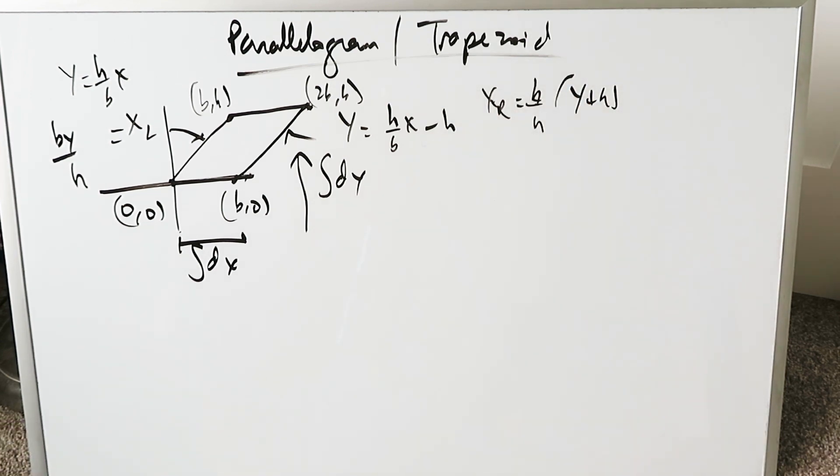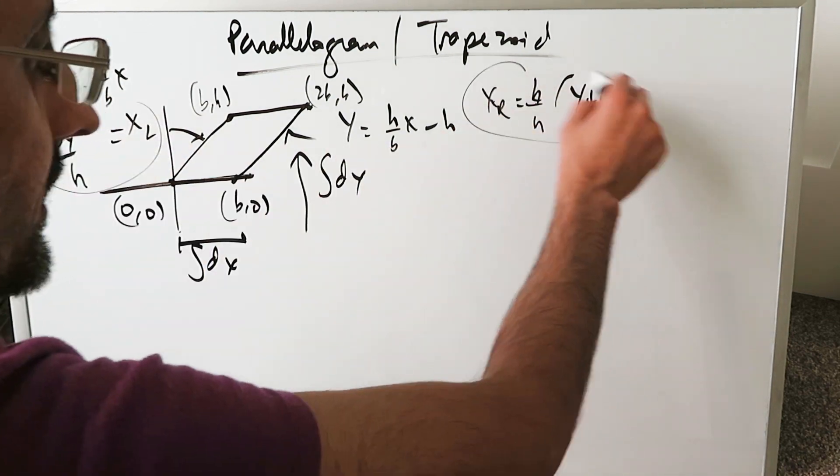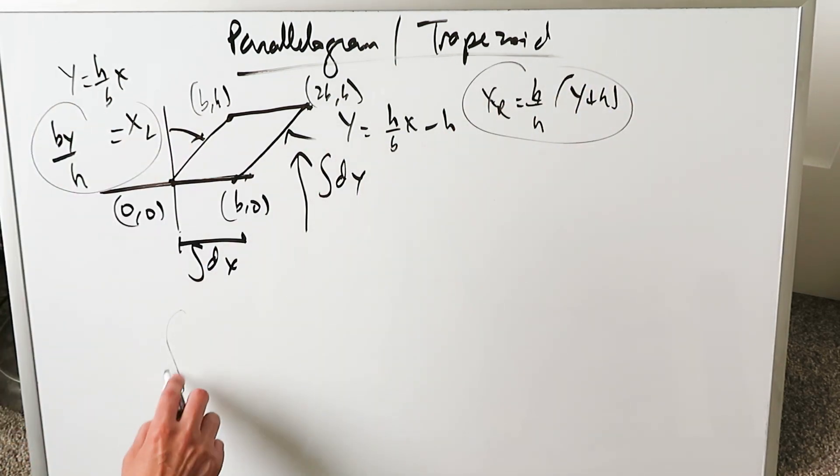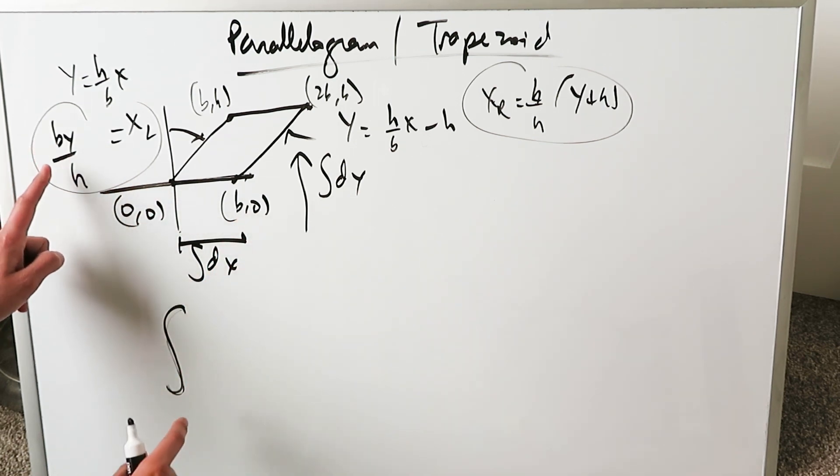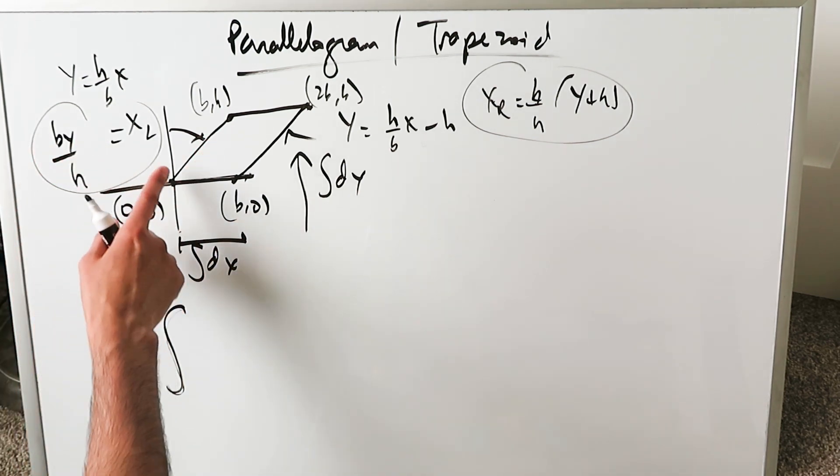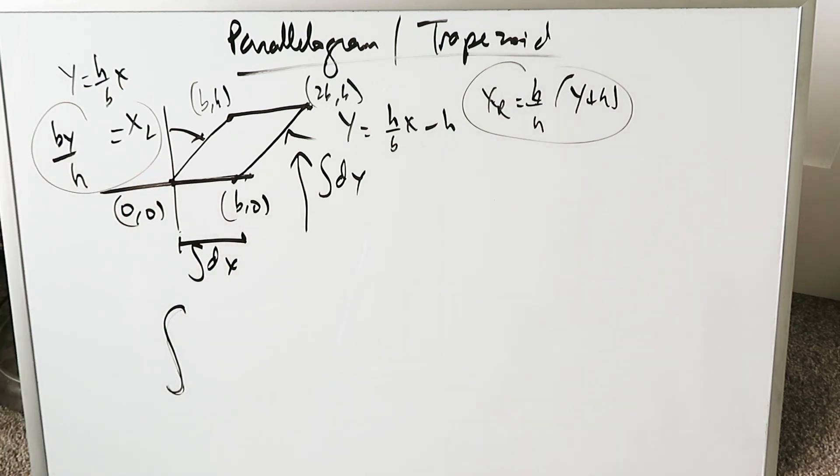Those are our two equations. Now let's look at our dx integral. You have this point (0,0) to (b,0), which will obviously adopt these limit values because the movement will be inherent to the equations that serve as the limits.